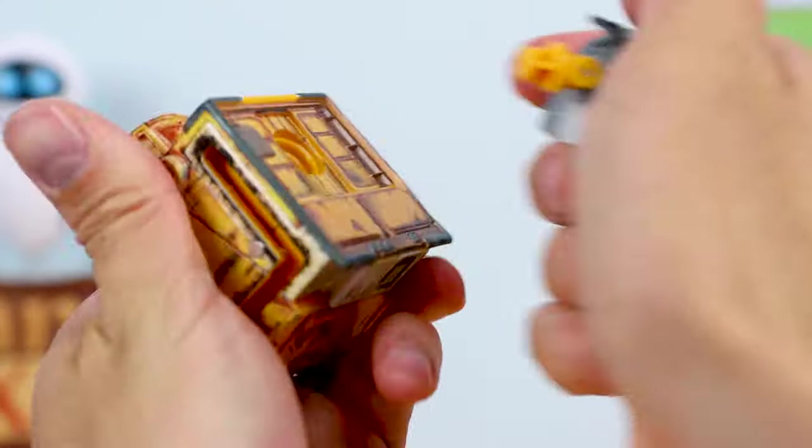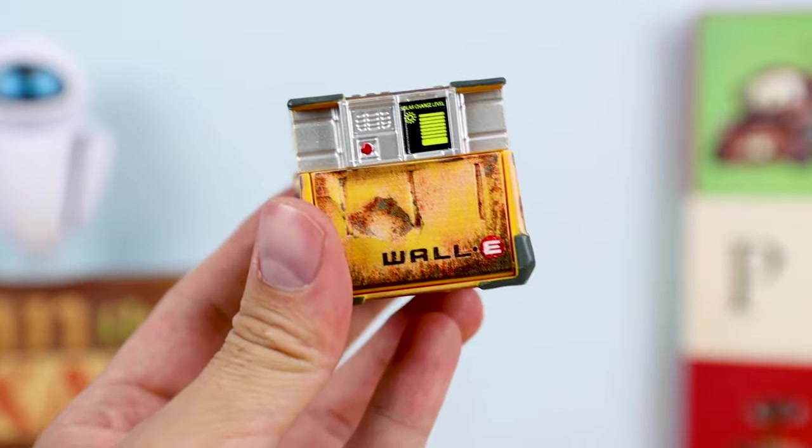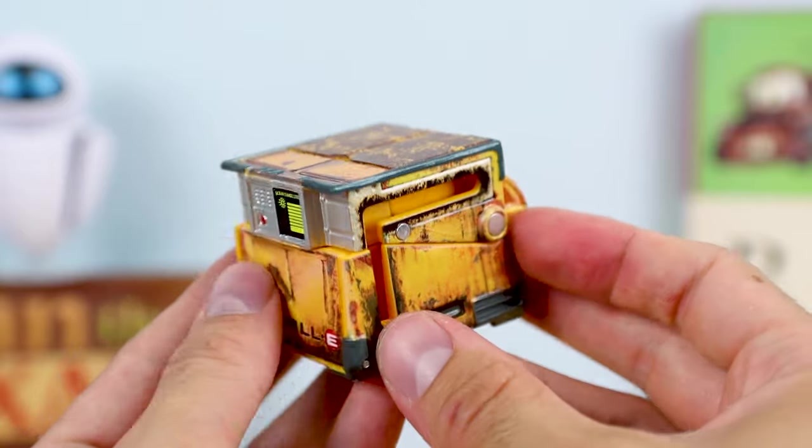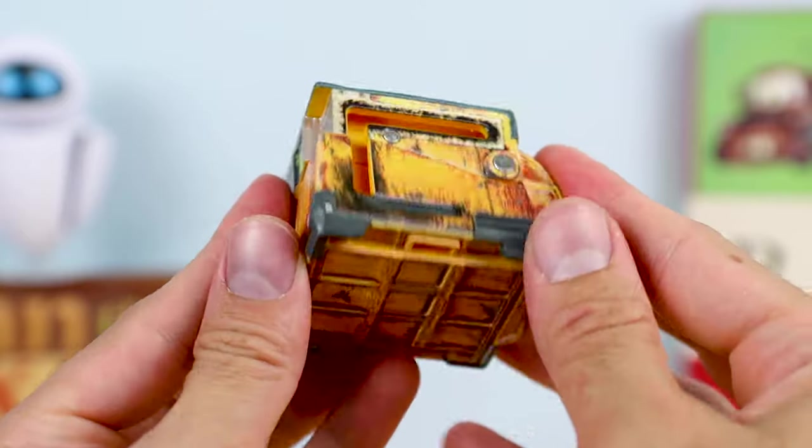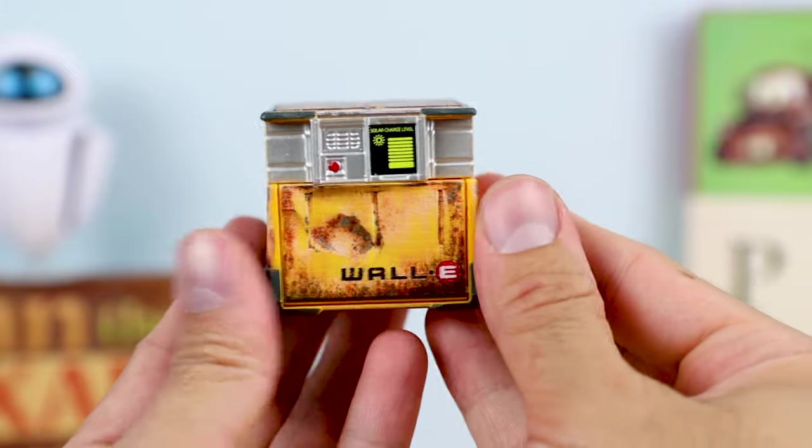And now for the final look, we'll pop off his secondary head here and snap the panel covering onto the top here. And here's while he's completed, tucked away into his cube like a turtle look. You'll remember he goes into this mode when he's either hiding, sleeping, or being defiant. There's a bunch of times. Really cool that you can break him down all the way to his simplest appearance.